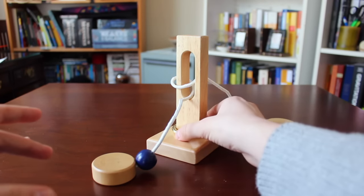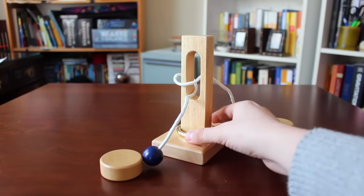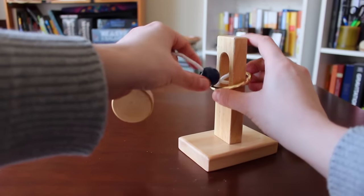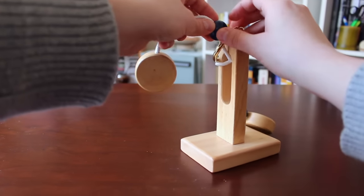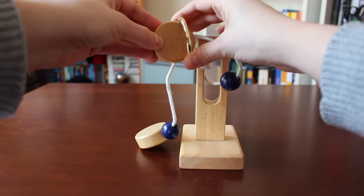The object is to take this central ring off of the center post, but doing so is very tricky. If you tried to take it straight off the top, you can make it past the blue bead, but the end pieces are too big for the ring to fit through.